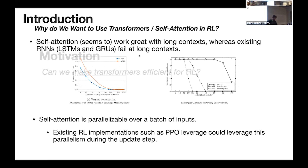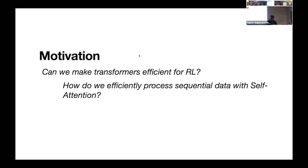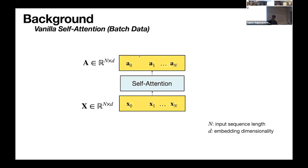Our goal is to make transformers efficient for reinforcement learning. The specific question is: how do we efficiently process sequential data with self-attention? Can we make changes to the self-attention layer such that processing is more computationally efficient? Before we start, I'll give some brief background on how the self-attention mechanism works.